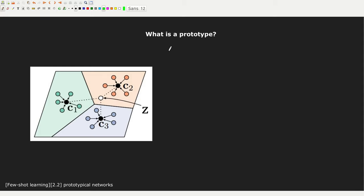Now suppose that we are in a three-way, five-shot setup. At this point you should know what 'way' and 'shot' mean. If you don't remember, go back to the very first lessons. Basically, this means we have three classes and for each class we have just five input samples.